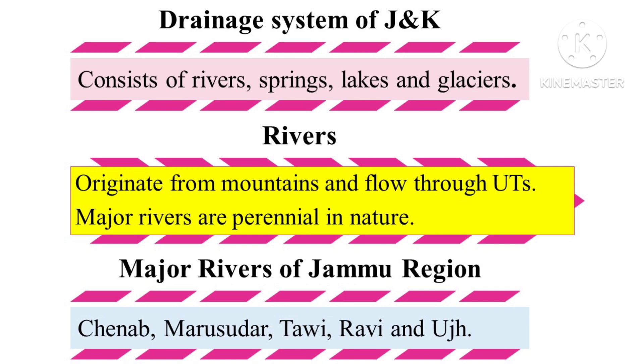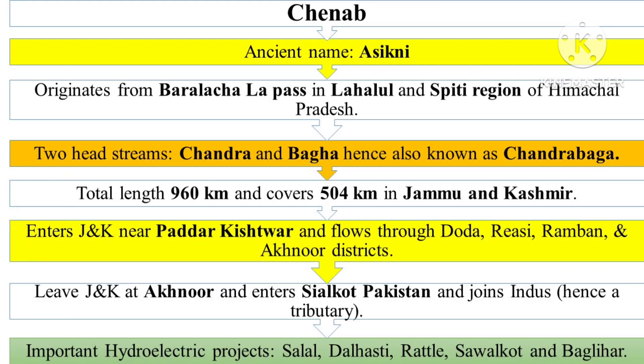The major rivers of the Jammu region include Chenab, Marusudar, Tavi, and Ravi. Chenab, also known as Asikni and Chandrabhaga, has a total length of 960 kilometers and covers 504 kilometers in Jammu and Kashmir. It enters J&K near Paddar Kishtwar and leaves at Akhnoor. Important hydroelectric projects on it are Salal, Dulhasti, Ratle, Sawalkot, and Baglihar.